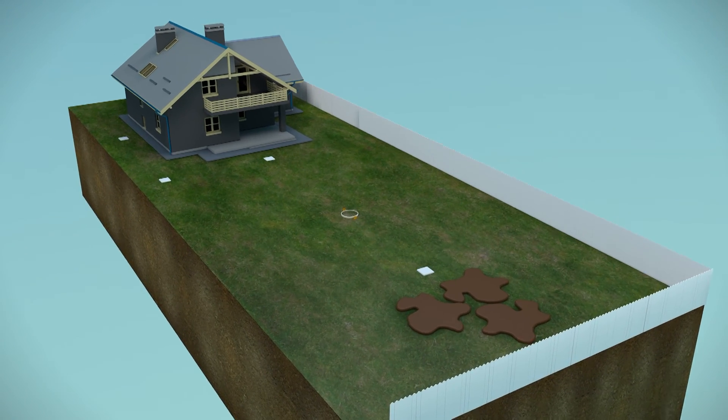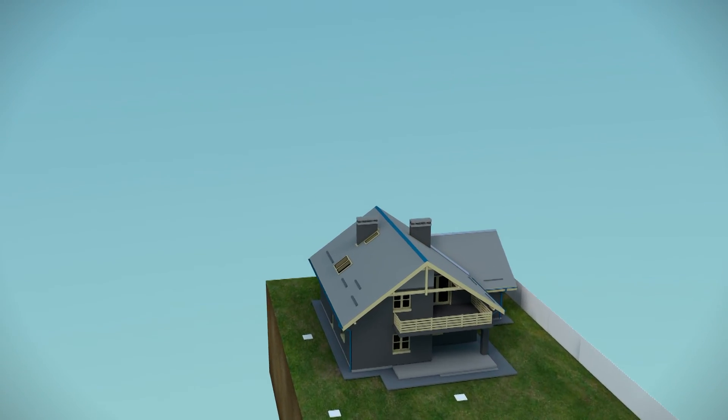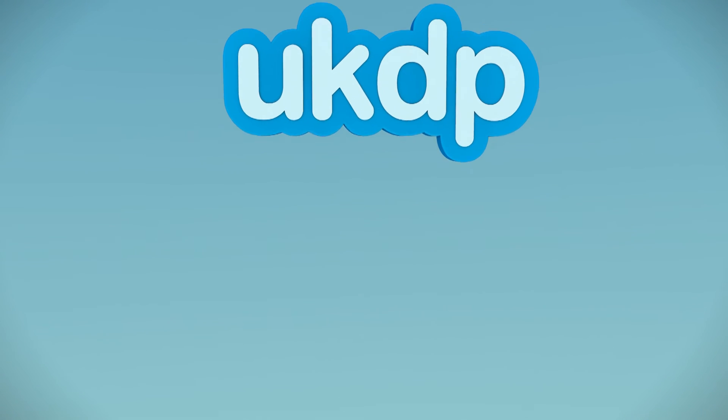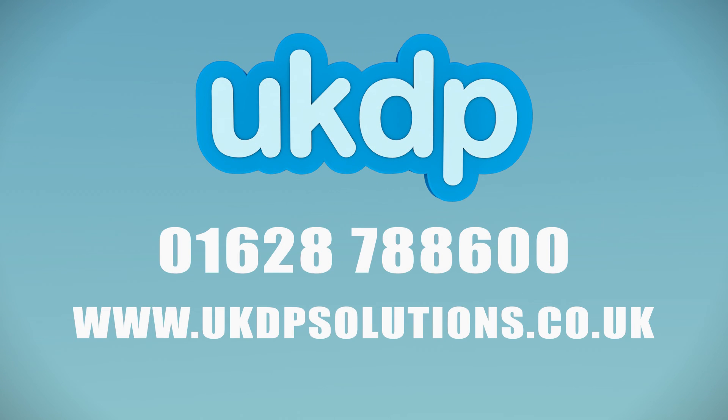If your septic tank is backing up or you have noticed waste pooling above the system, call UKDP today on 01628 788 600 or visit our website at www.ukdpsolutions.co.uk to arrange a septic tank investigation.